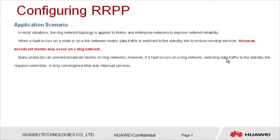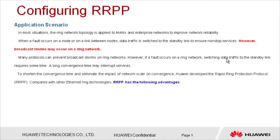Many protocols can prevent broadcast storms on ring networks. However, if a fault occurs on a ring network, switching data traffic on the standby links may require some time. A long convergence time may interrupt services. To shorten this time and eliminate the impact on the network, Huawei has developed the RRPP.